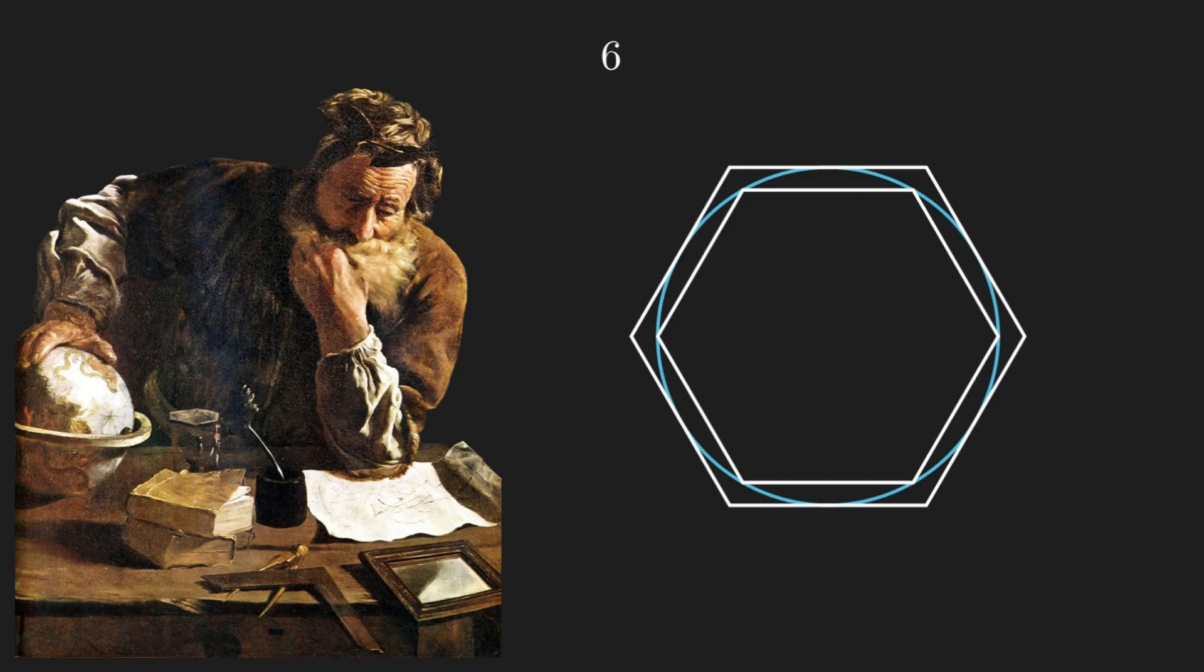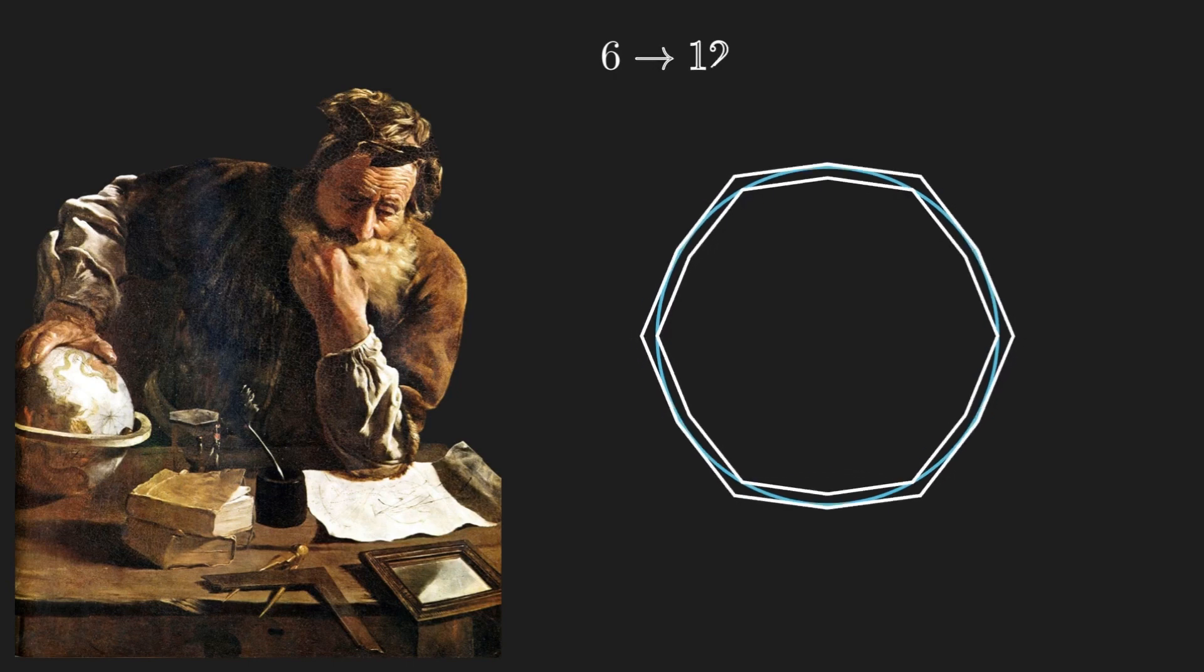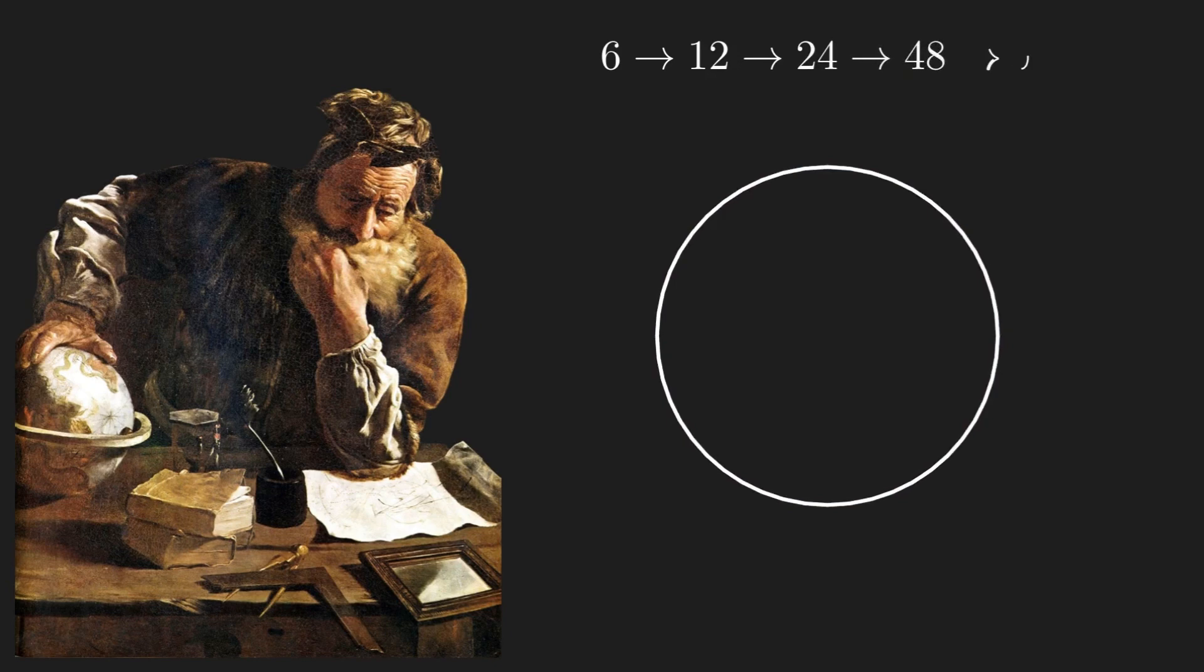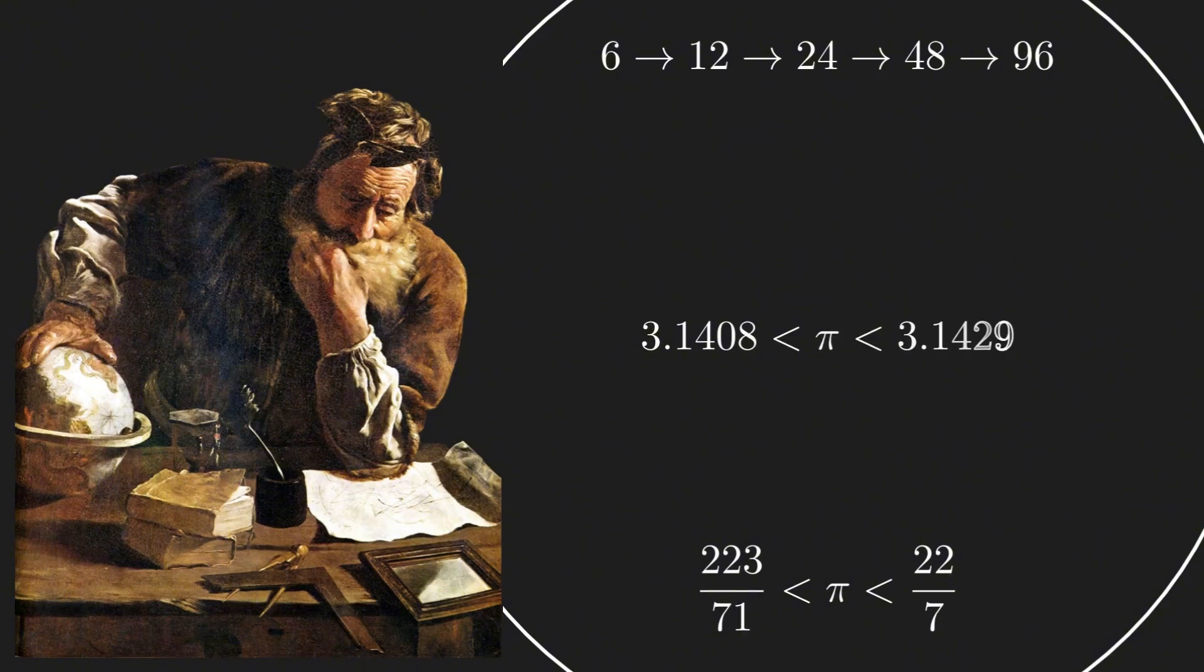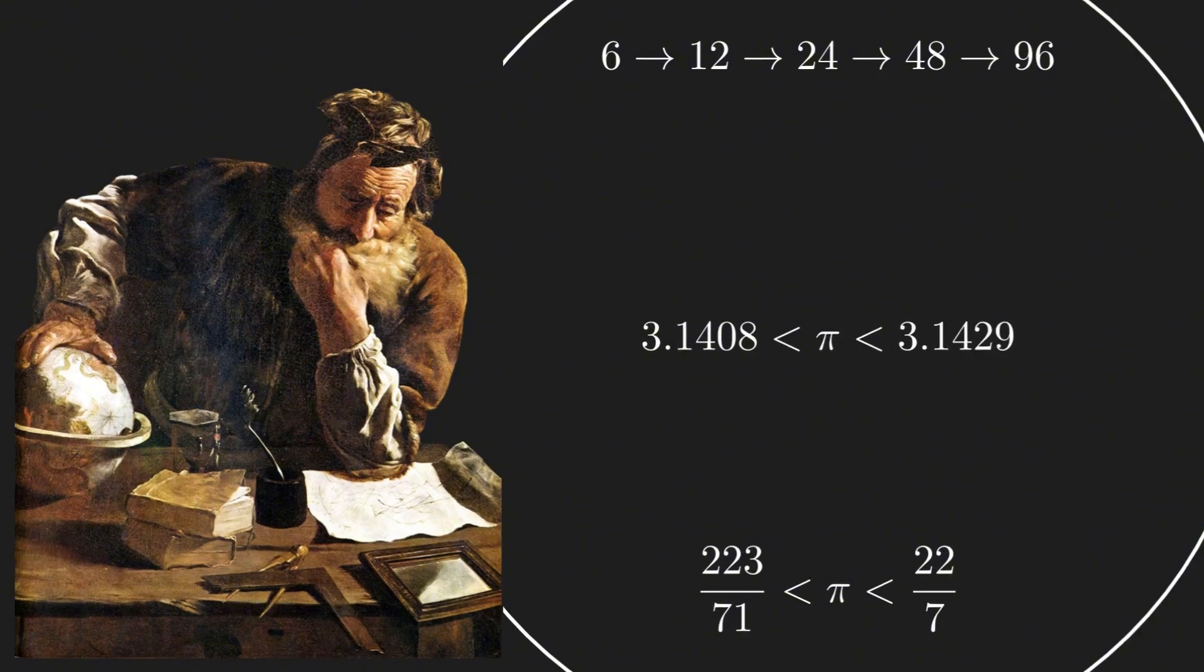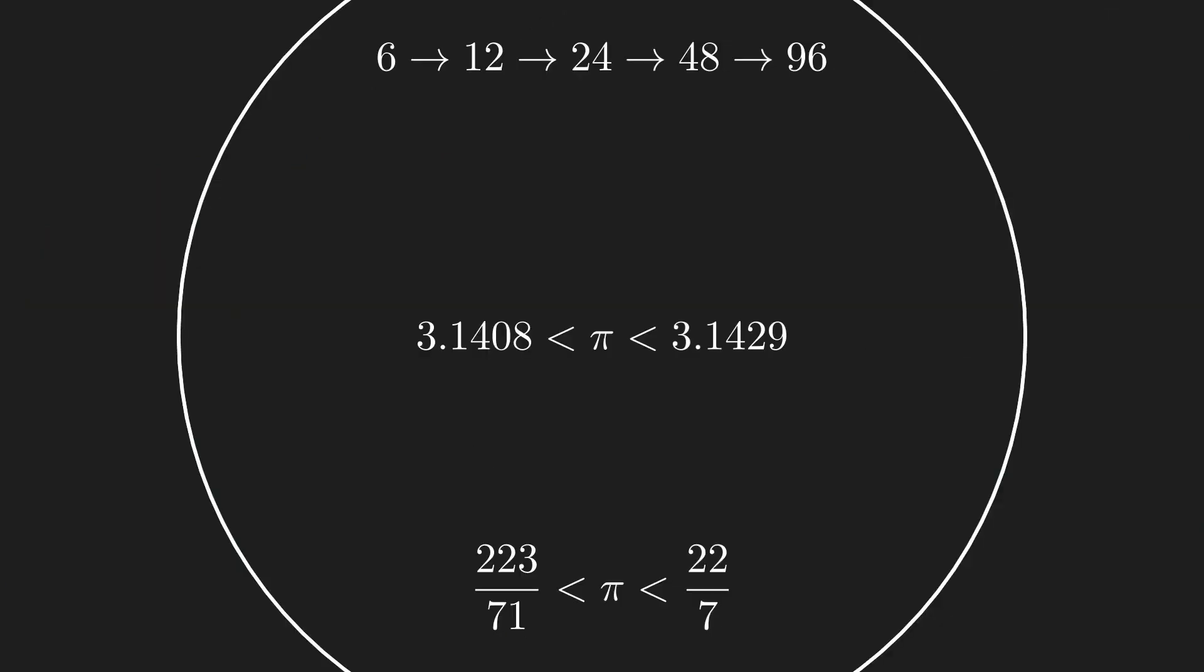He started with a hexagon and doubled the number of sides, making the shape increasingly circular. By the time he reached 96 polygons, he calculated the following bounds per Pi. This was the most accurate estimate of Pi over 1500 years. The fraction 22 over 7, popularly used in school as an approximation, come from Archimedes' work.